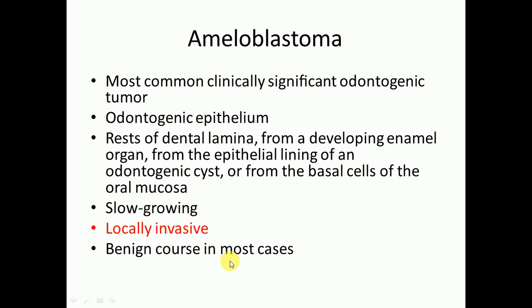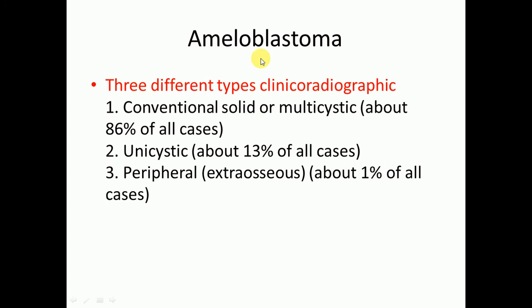There are three types of ameloblastoma based on clinical and radiographic features: conventional solid or multicystic, which accounts for about 86% of all cases; unicystic, about 13% of all cases; and peripheral (extraosseous), about 1% of all cases. We will focus on conventional solid or multicystic ameloblastoma.